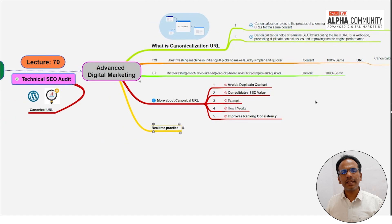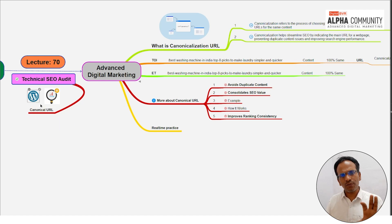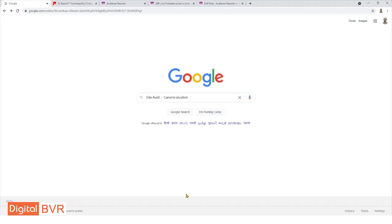We'll now practice in a WordPress website. In the site audit, the next item to check is canonicalization. The site audit reviews your website — every article, every page — to check whether the canonicalization is set up or not.